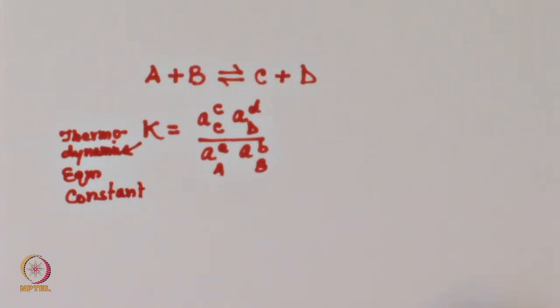How do we measure the value of equilibrium constant in the laboratory? Even taking the same example — A plus B reacting to form C plus D — in the laboratory we do not directly determine activities. We usually prepare solutions in terms of molality, molarity, or mole fraction. Molality or mole fraction can be connected to activity through the activity coefficient.